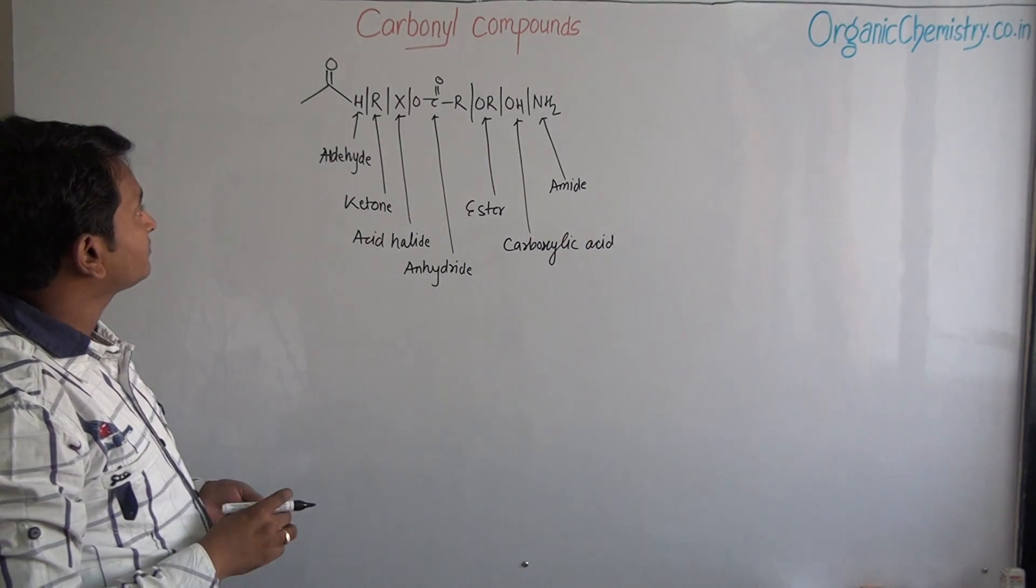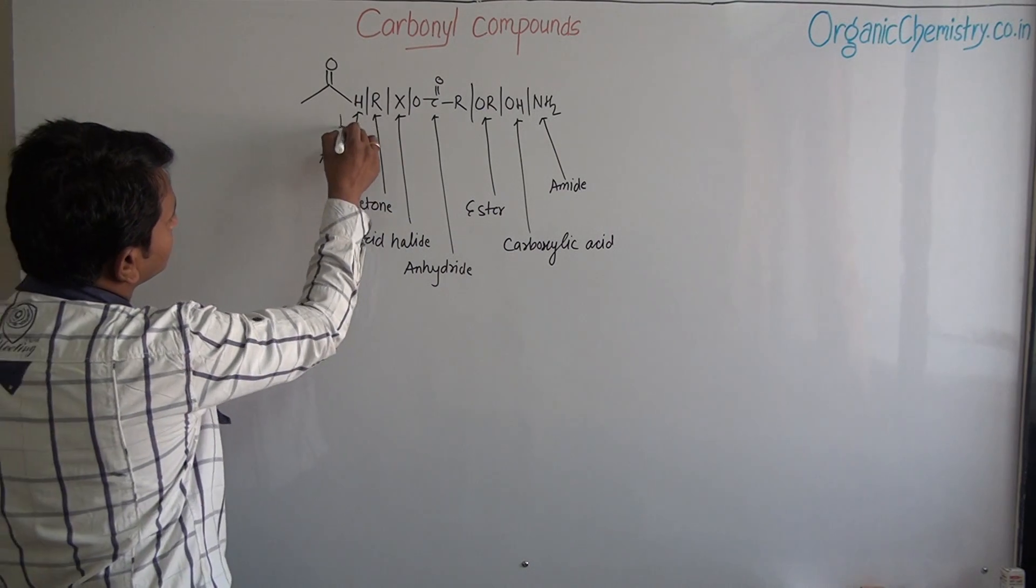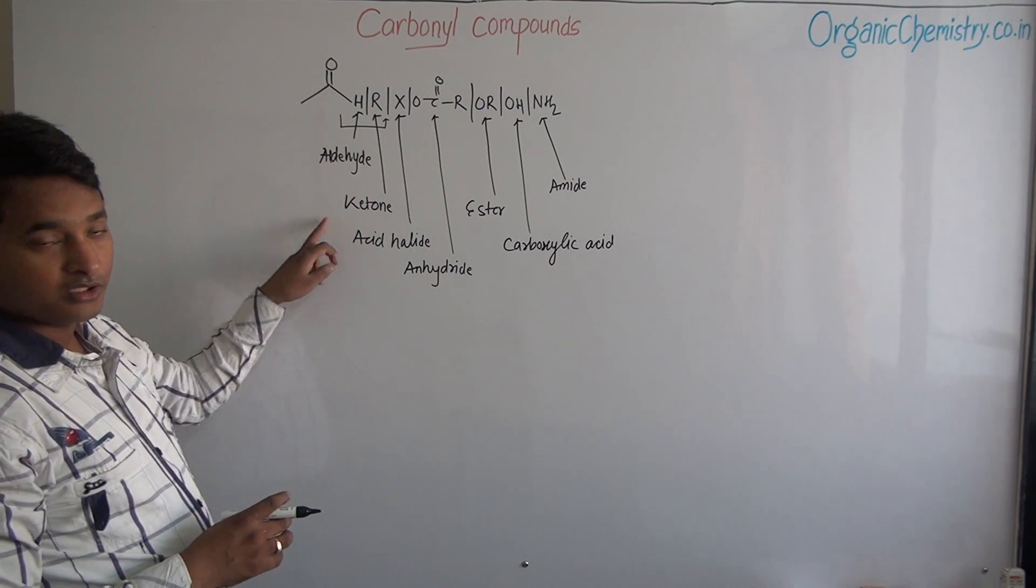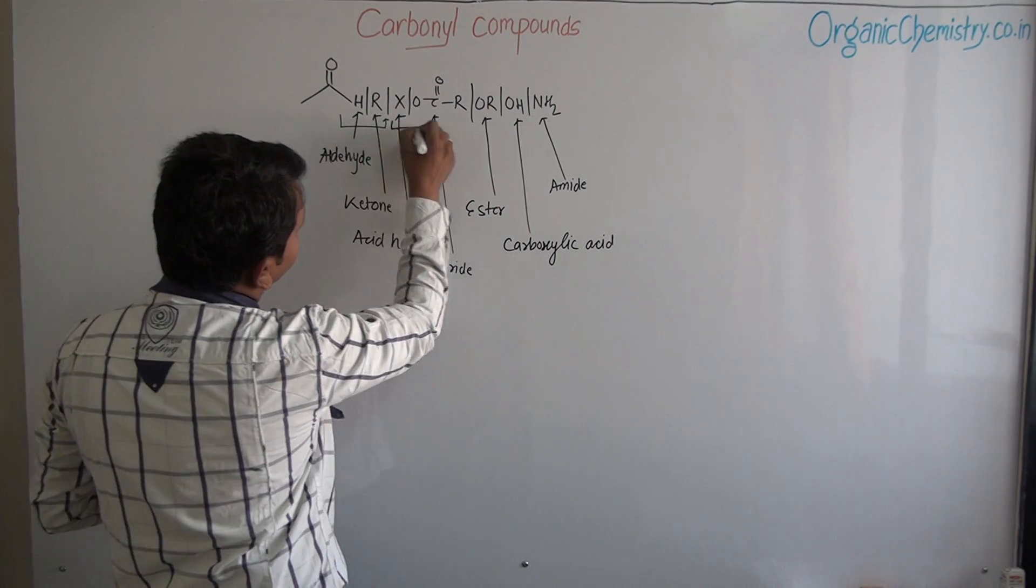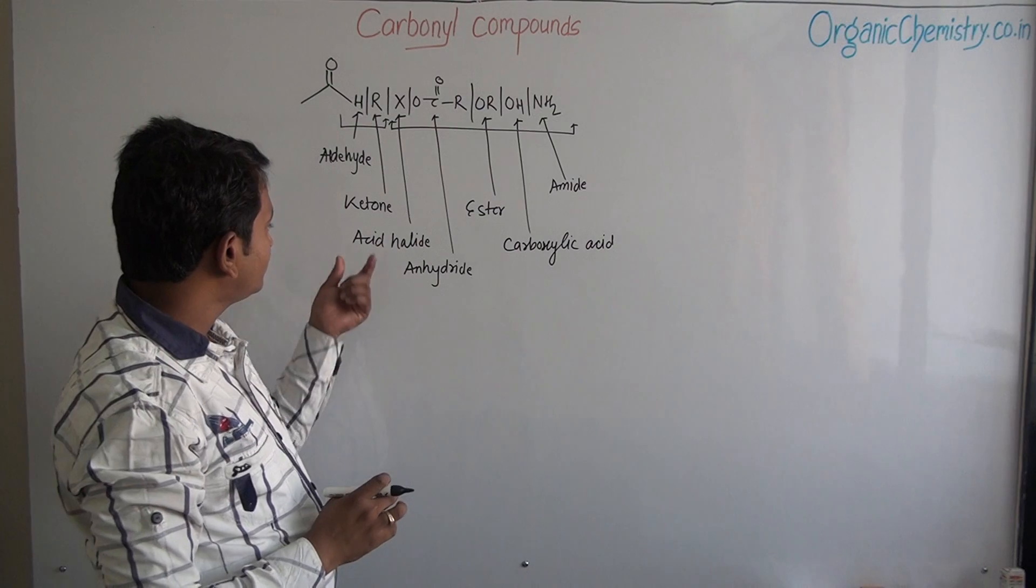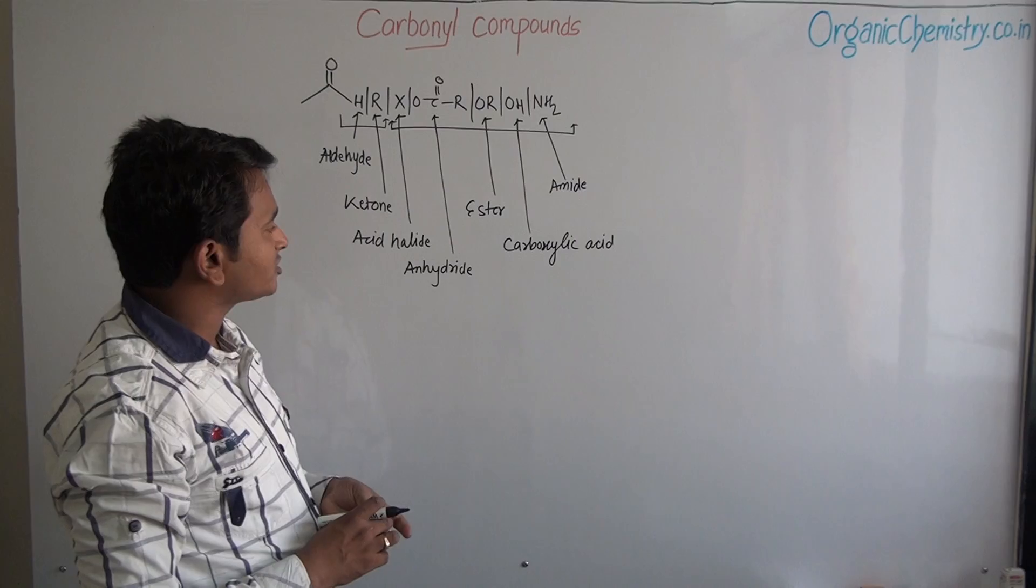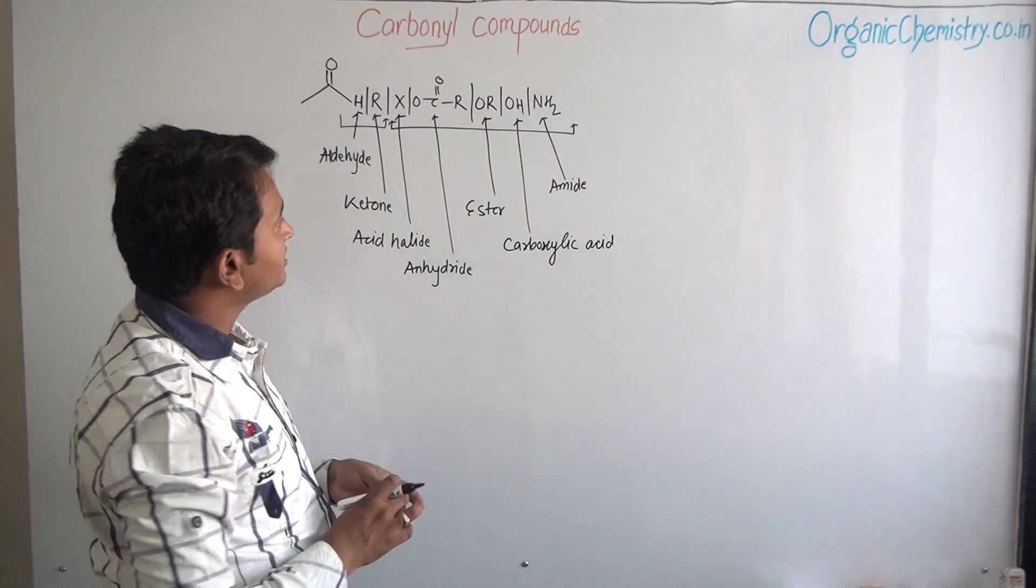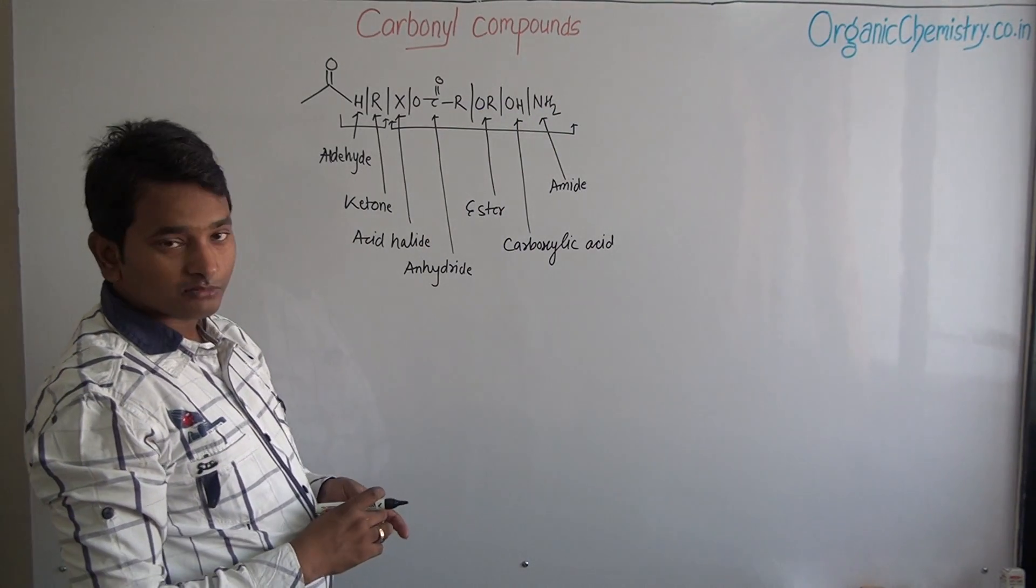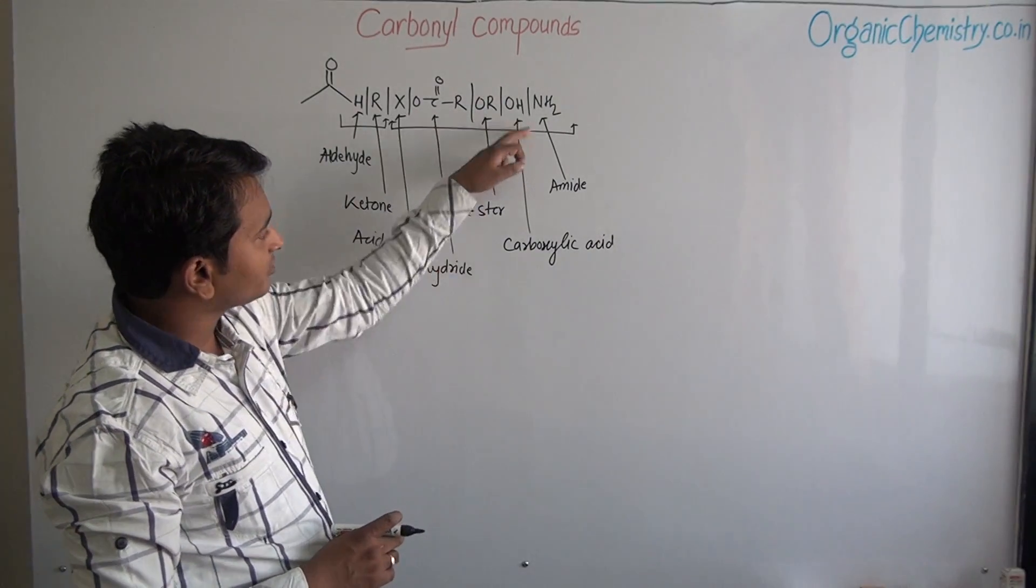But on the basis of chemical reaction, these carbonyl compounds are divided into two parts. First, which shows addition reaction, they are aldehyde and ketones. And those which shows substitution reactions are called as carboxylic acid and its derivatives. They are acetylide, anhydride, ester, and amide. They are the derivatives of carboxylic acid. If OH is replaced by any atom or group, then it is called as the derivative of carboxylic acid. It may be in the form of acetylide, anhydride, ester, or may be amide.